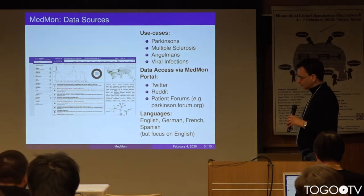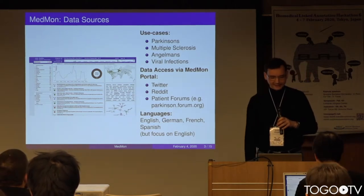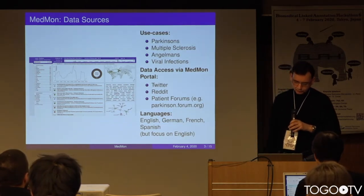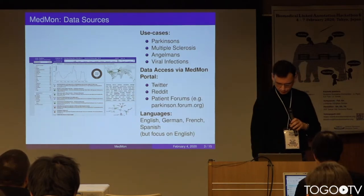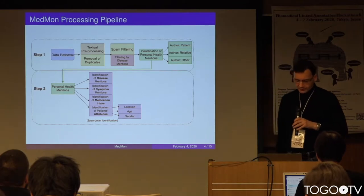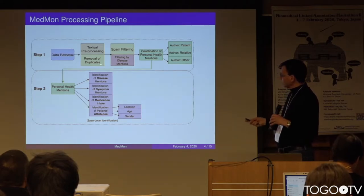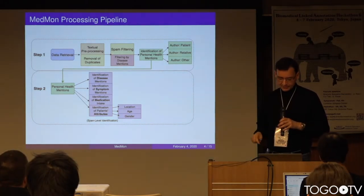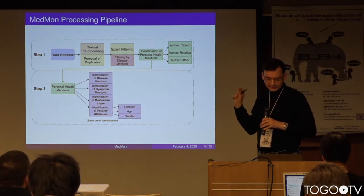Patients who are particularly active in social media discussing their disease might be good candidates. This project is a collaboration with another university in Switzerland, and our partner provides an interface for downloading social media — mainly tweets, Reddit, and some patient forums. These are the diseases we monitor, at least initially, with a goal of dealing with different languages, although our main focus so far has been English. The processing pipeline starts from data retrieval, pre-processing including removing duplicates and filtering spam, locating specific diseases, and then extracting specific mentions we are particularly interested in.